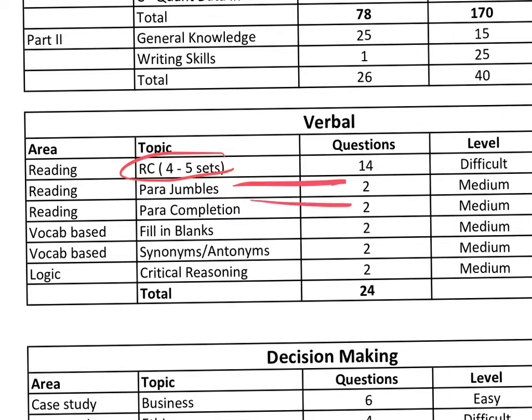Para jumbles and para compilation are easy to medium — do target these areas. There are two questions for fill in the blanks, two for antonyms/synonyms, and two for critical reasoning. That's your typical breakup of 24 questions. If the number becomes 25, expect a slight change in the overall pattern. The total number of questions in the verbal section is not fixed, but tentatively it will be between 24 to 30.